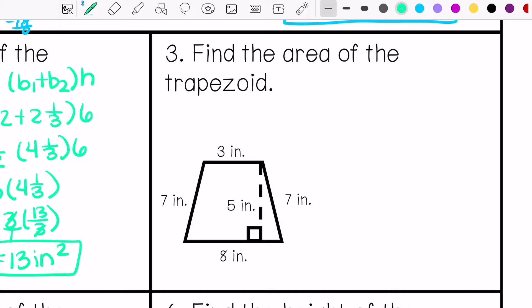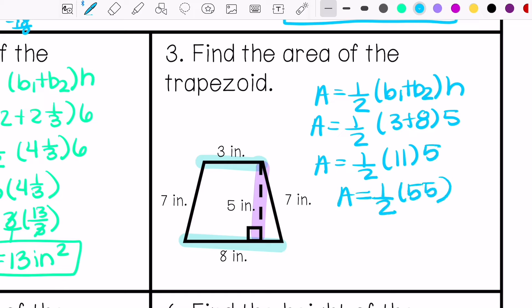Alright, number three, we're finding the area again. This is my height. Height, bases. Write my formula. My answer is area equals 27.5 inches squared.